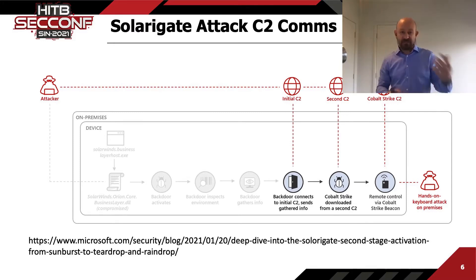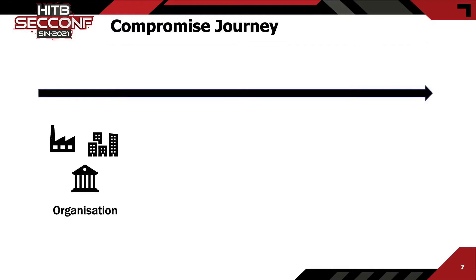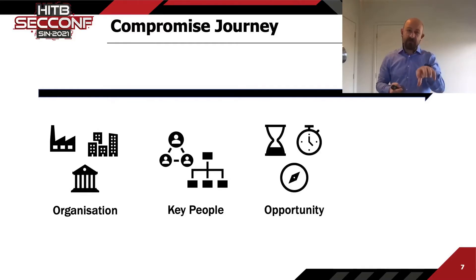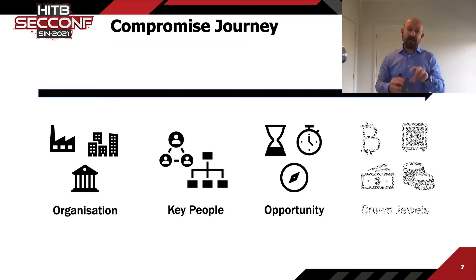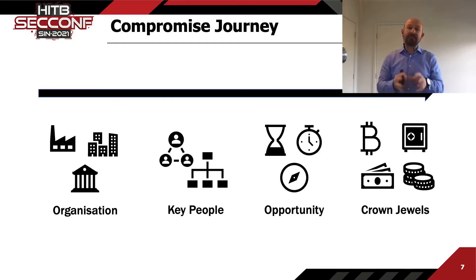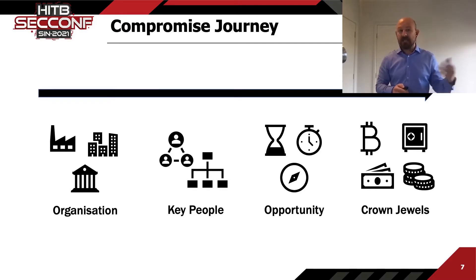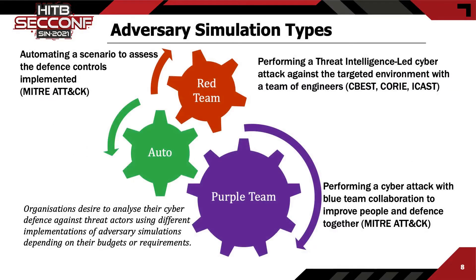From the threat actor perspective, they identify the organization, identify people, find the most valuable assets, and steal them. All this process takes a long time. We can identify some of those activities or simulate them to verify our telemetry. There are different types of adversary simulations. Red Team is a covert operation — blue teamers are not told, only white-team members such as the Executive Committee.